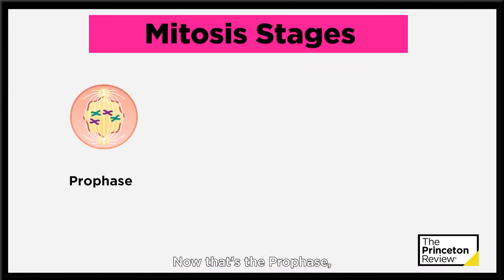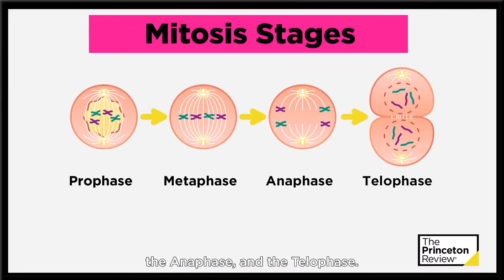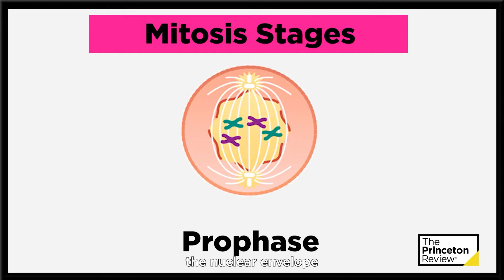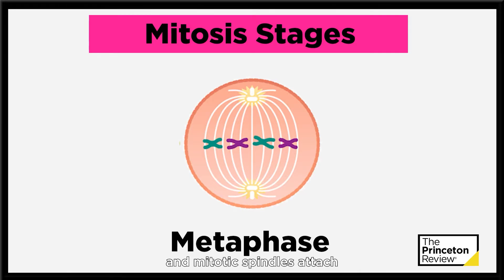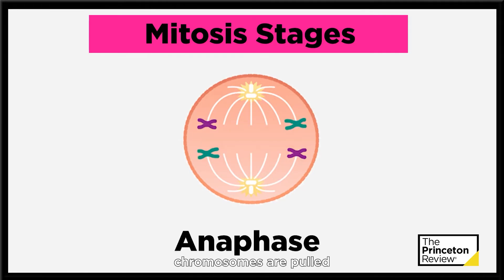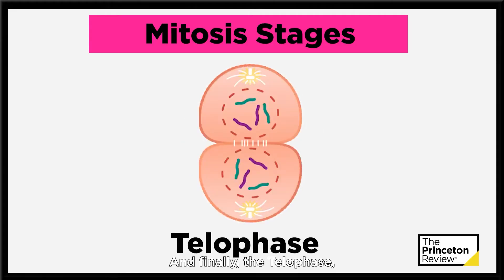The four stages of mitosis are: prophase, metaphase, anaphase, and telophase. During prophase, the nuclear envelope disappears and chromosomes condense. In metaphase, chromosomes align at the metaphase plate and mitotic spindles attach to kinetochores. In anaphase, chromosomes are pulled away from the center. And finally, in telophase, mitosis is terminated as the two new nuclei form.